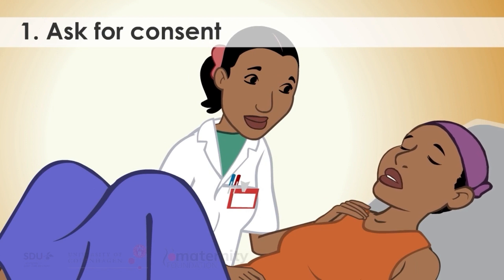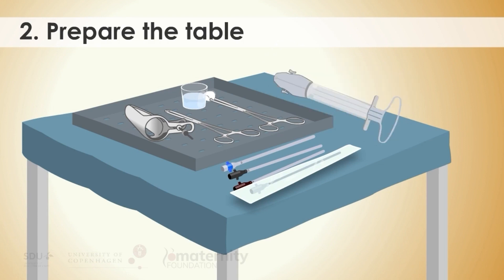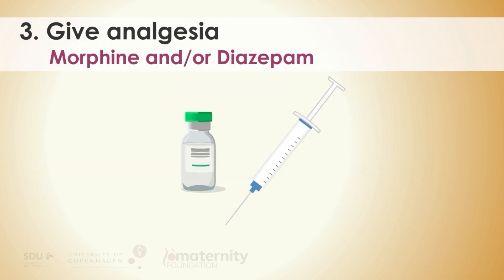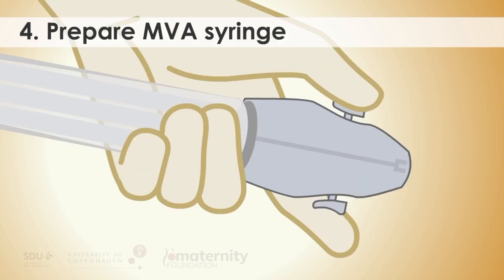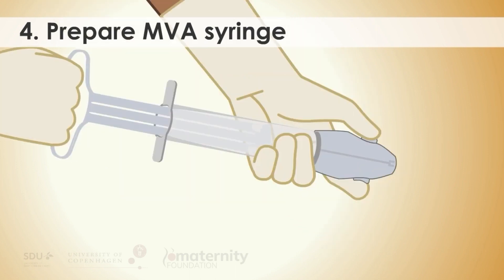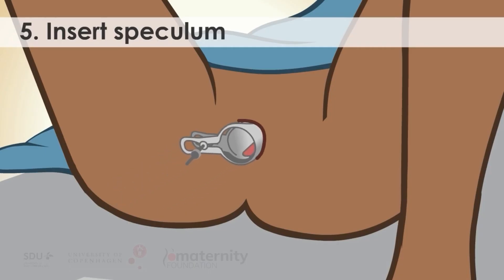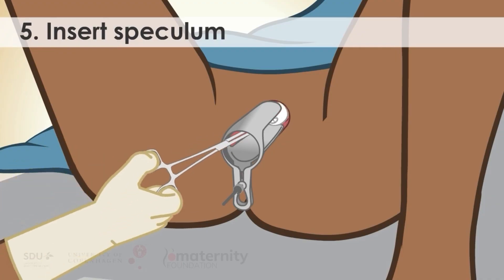1. Ask for consent for the procedure and confirm that the woman is comfortable. 2. Prepare the table with sterile field for cannulas and other instruments. 3. Give analgesia such as morphine and/or diazepam. See drug list for details. 4. Prepare MVA syringe by closing the valves and by retracting the plunger. 5. Insert speculum slowly and gently and clean vagina with clean water.